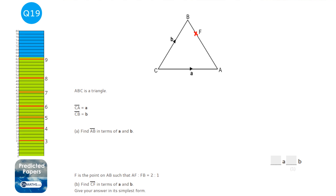For vectors, I treat them like roads. To find vector AB in terms of a and b, I can't go directly, but I can go via C. Going backwards through a gives minus a, then forwards through b gives plus b. So AB equals minus a plus b, or equivalently b minus a.